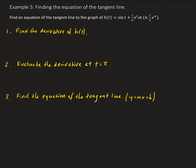In this example, we want to find an equation of the tangent line to the graph of the given function at the given point. First, we need to find the derivative of h with respect to t. Once we find that, we evaluate the derivative at t equals pi, and then find the equation of the tangent line at pi. We'll write it in the form y equals mx plus b, which is the slope-intercept form.